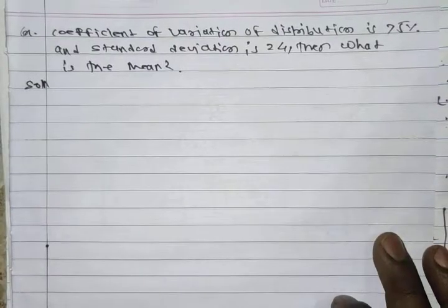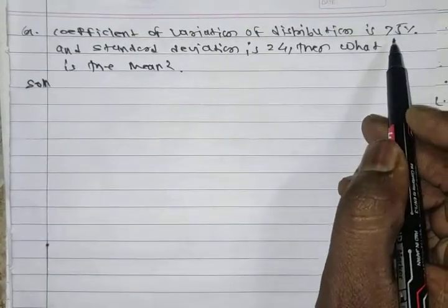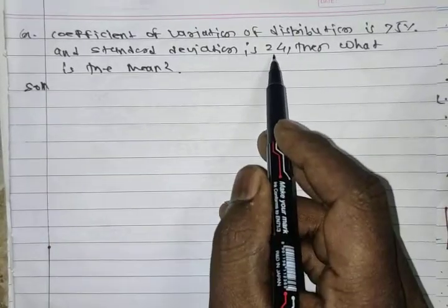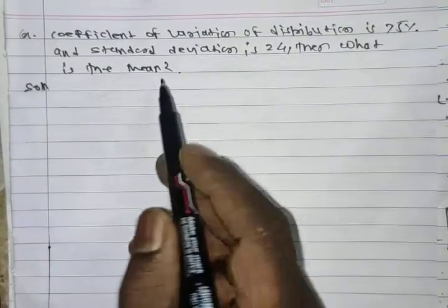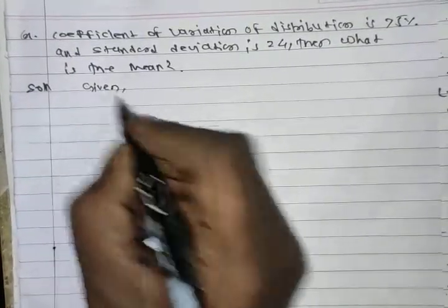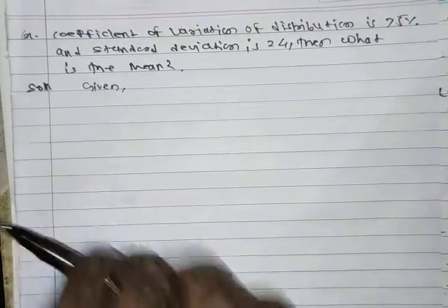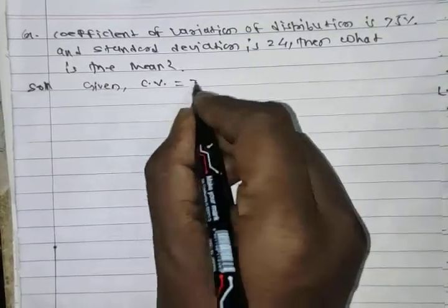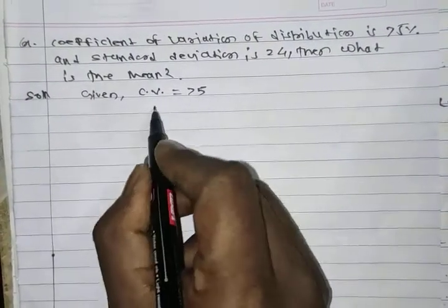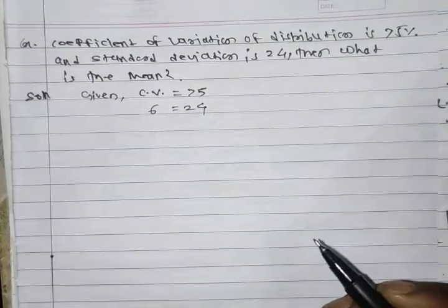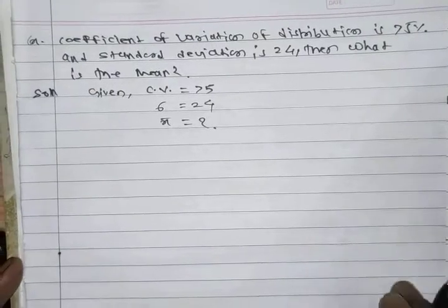Next example: the coefficient of variation for a distribution is 75%, and the standard deviation sigma is 24. We have to find the mean, i.e., find the value of x-bar.